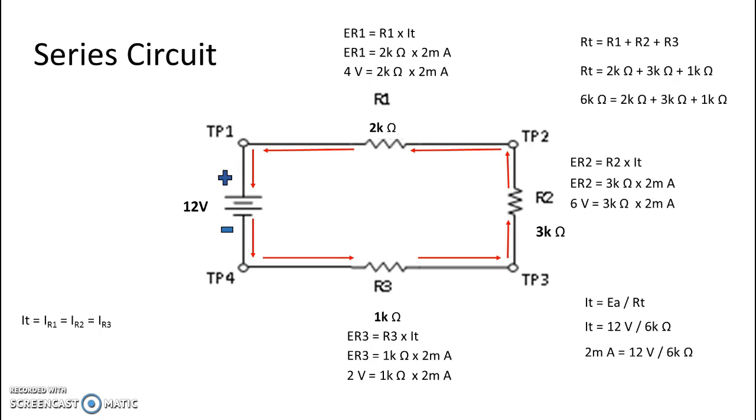Now, if I was reading from test point 4 to test point 3, and I had my black lead referenced at test point 4 and my red lead referenced at test point 3, then I would see the difference of my black lead, which was 0, and my red lead, which would be 2 volts. So 2 volts minus 0 would give me 2 volts on my display if I was using a digital multimeter.